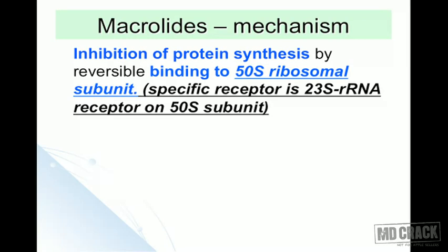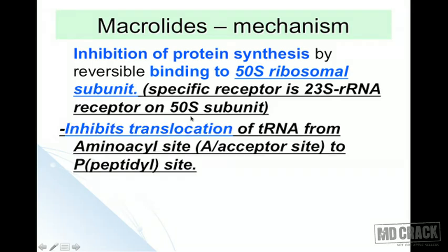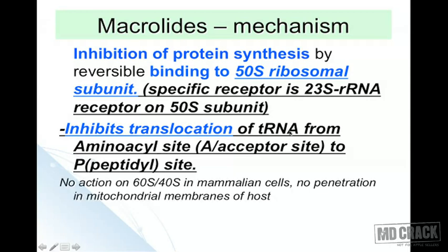The mechanism of action is inhibition of protein synthesis by reversibly binding to the 50S ribosomal subunit. The specific receptor site for binding is the 23S rRNA receptor on the 50S subunit. This inhibits translocation of tRNA from the aminoacyl (A) site to the peptidyl (P) site. There is no action on 60S or 40S in mammalian cells and no penetration into mitochondrial membranes of the host.